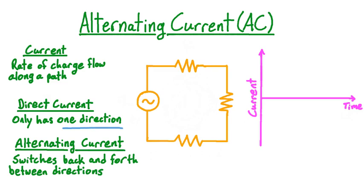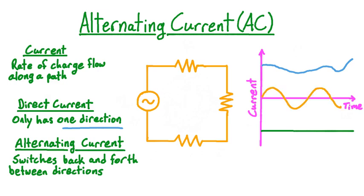This is a current that only has one direction. This blue line represents a direct current. Note that this current is not constant in time — it does change size — but the value is always greater than zero, which means it always has the direction associated with positive current. This green line also represents a direct current. The size of this current is constant in time, but its value is always less than zero, so it has the opposite direction. On the other hand, the current represented by this orange curve is not a direct current but an alternating current, because its value switches from greater than zero at some times to less than zero at other times — in other words, this current changes direction.